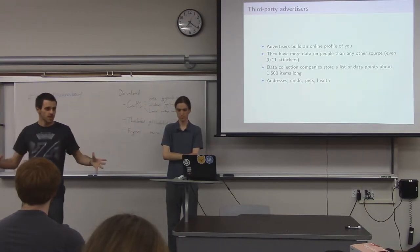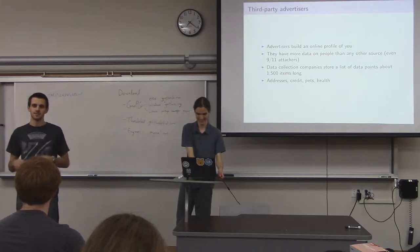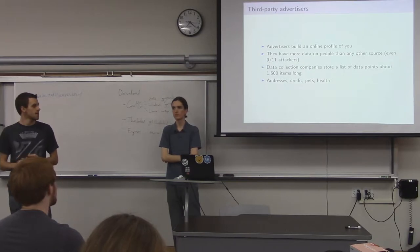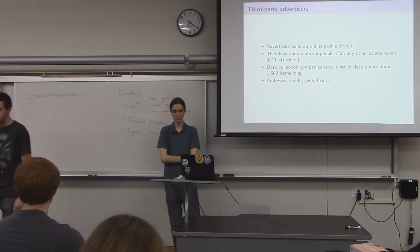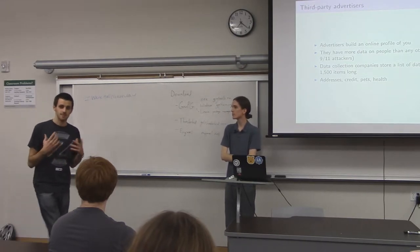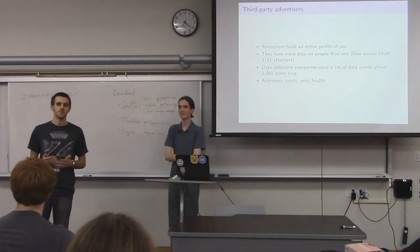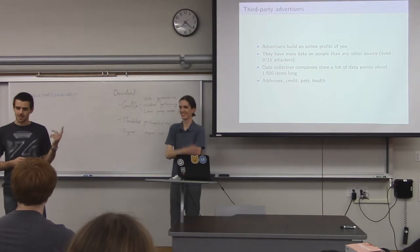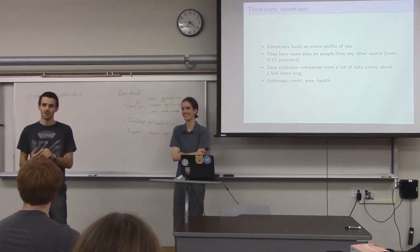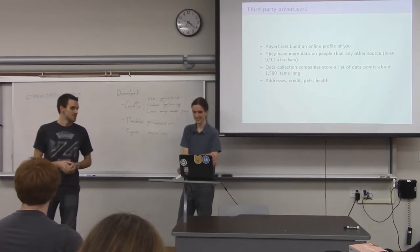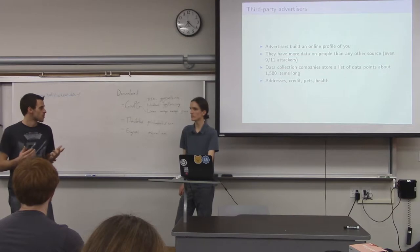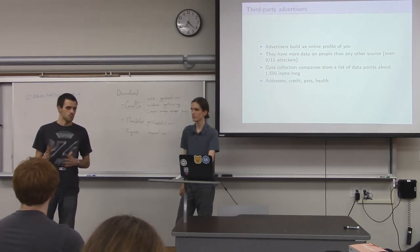An interesting fact is that companies like Acxiom collect data and build online profiles of people — and they have more data than the government does. They have giant warehouses and a list of data points about 1,500 items long. After the 9/11 attacks in 2001, when the government released the names of the attackers, the CEO of Acxiom emailed the government saying they had past addresses, current addresses, who the attackers lived with, and all this info on them. They also have info on pets you own, health info, and credit history.